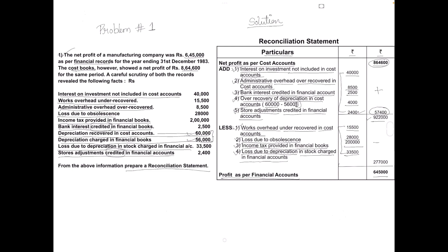This profit was already given in the question — the net profit of the manufacturing company was 6,45,000 as per financial records, and we have got the same amount. So our reconciliation statement is correct. Hope you got the solution. For more such videos, do like, share, and subscribe to my channel. Thank you friends.